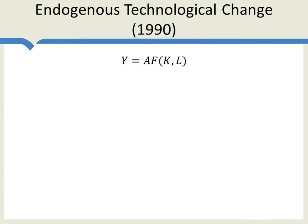Romer's most famous paper is called 'Endogenous Technical Change.' This is a monumental, foundational paper in new growth theory, and it has led to a huge outpouring of work in growth theory. We won't be able to discuss the paper in much detail, but let me give you an essence of where it came from.